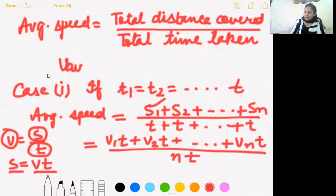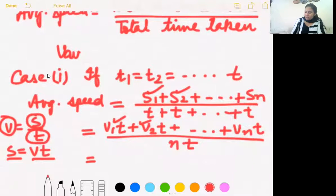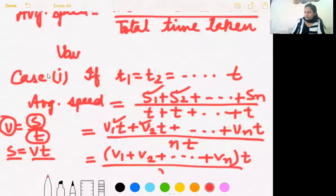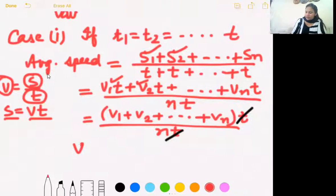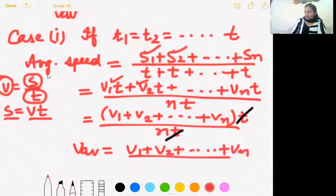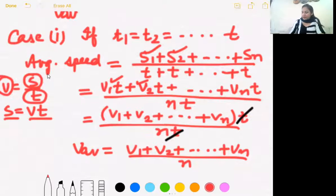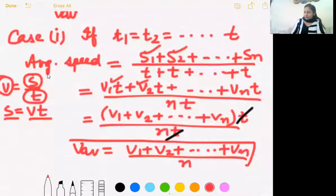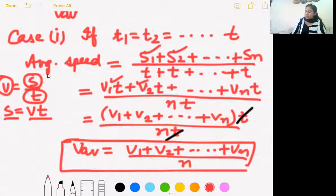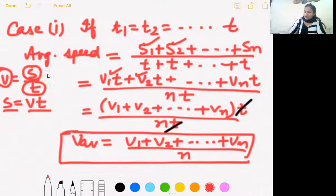Using S1 = V1·T, S2 = V2·T and so on, we take T common from numerator and denominator, and T cancels out. The average speed formula becomes the arithmetic mean of the different speeds — that is, add all speeds and divide by n. So when time gaps are the same, the average speed is the arithmetic mean of all given speeds.